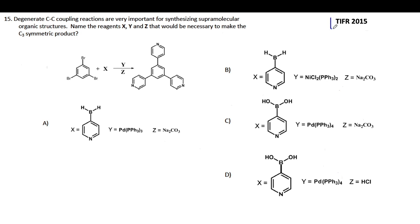TIFR 2015 question, another simple yet good question: Degenerate carbon-carbon coupling reactions are very important for synthesizing supramolecular organic structures just like this one. Name the reagents X, Y and Z that would be necessary to make the C3 symmetric product. This is a C3 symmetric product; you put a pen over here and rotate the molecule by 120 degrees you will get the same indistinguishable molecule. You have to find out X, Y and Z all three things together.